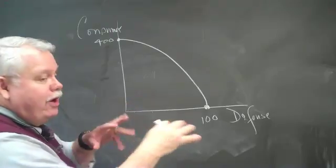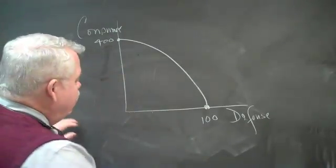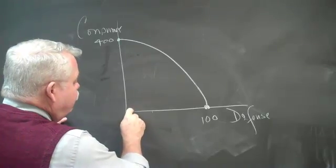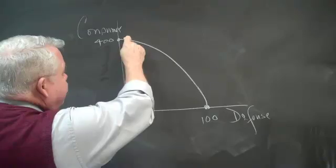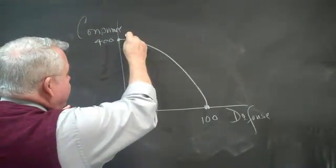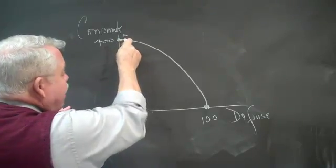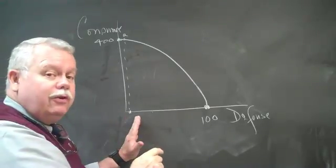Now, without getting into marginal rates of substitution, what we're basically illustrating is the first few units of defense take very little from your consumer goods. That is, you could be here at point A, where you have almost the same amount of consumer goods, but you gave up a little in order to get some defense goods.